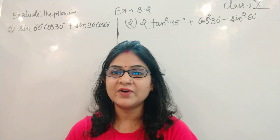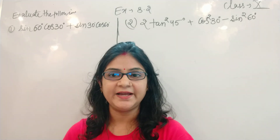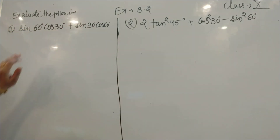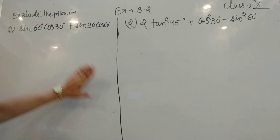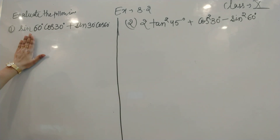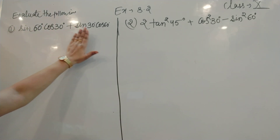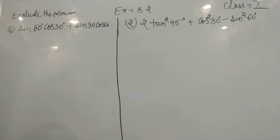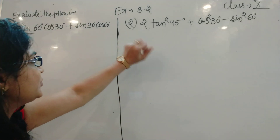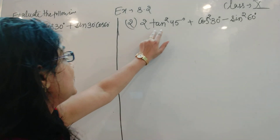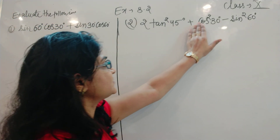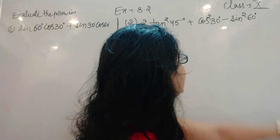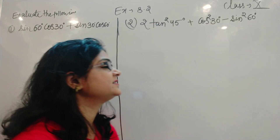Today we discuss question number 1 of exercise 8.2. The first question is: evaluate sin 60° cos 30° + sin 30° cos 60°. The second question is: 2 tan² 45° + cos² 30° − sin² 60°.